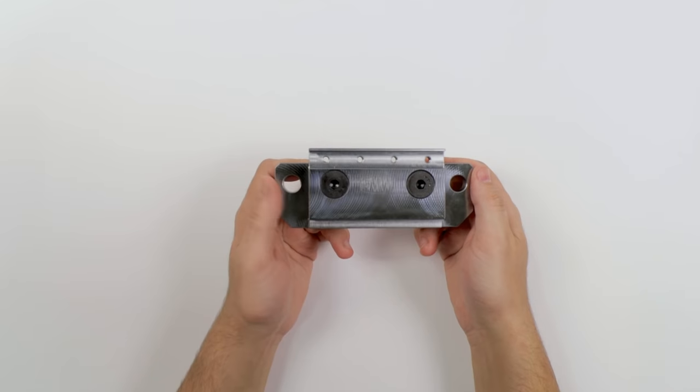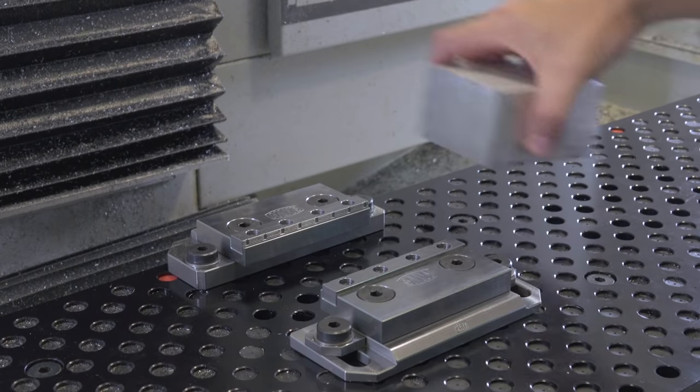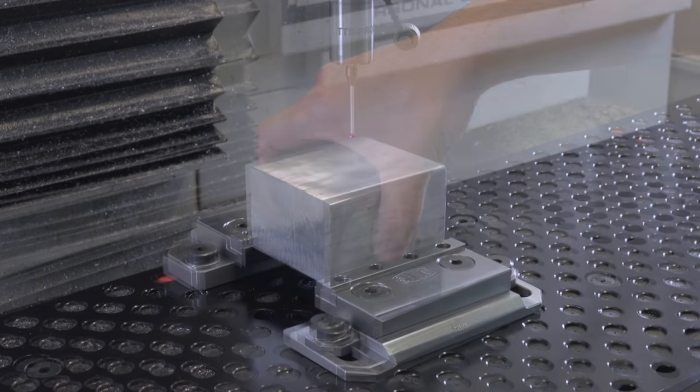I decided to give John Saunders' Modvise a try. I still need a vise so I can make the fixtures, but this will use less space.